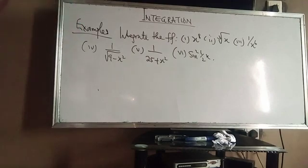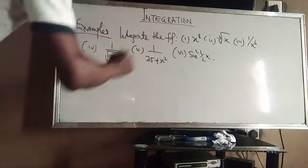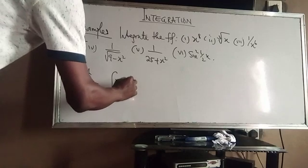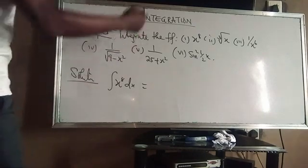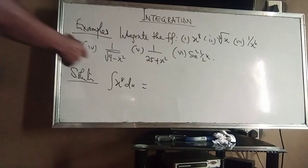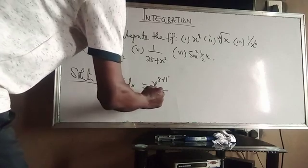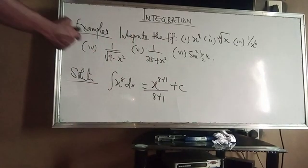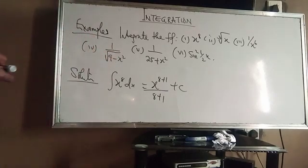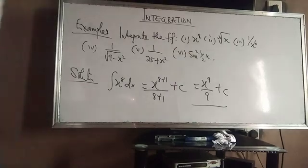Now let's look at these. For the first one, integrating x^8 dx: remember from our standard form, the integral of x^n dx is x^(n+1)/(n+1) + C. Here n is 8, so we have x^(8+1) all over (8+1) plus C, which gives x^9 over 9 plus C. You must include C — it's an arbitrary constant because this integral has no limits.